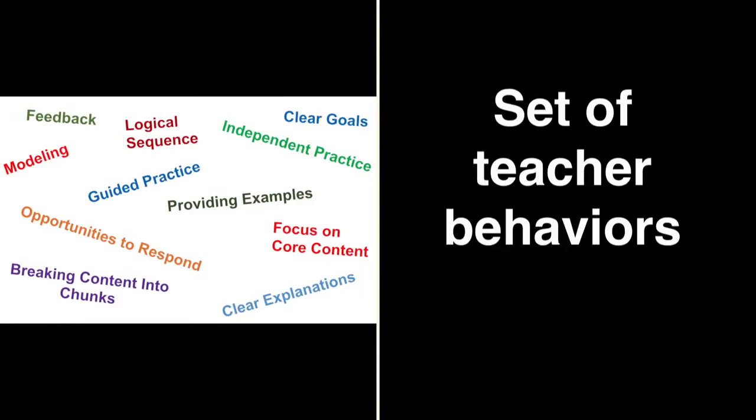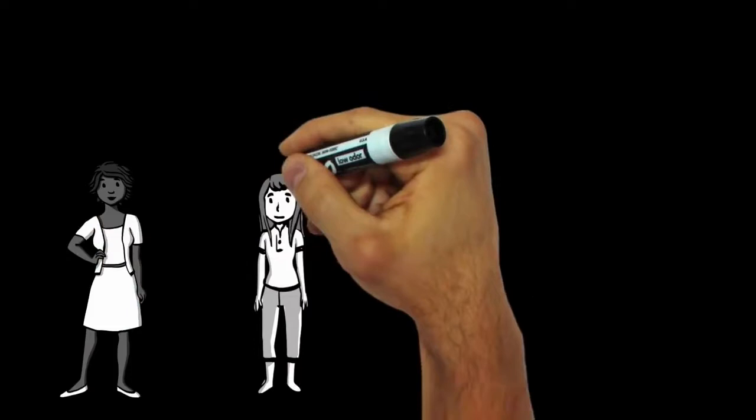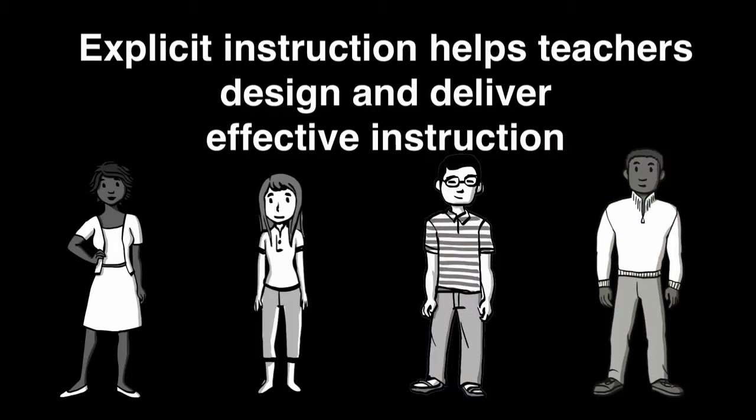Explicit instruction is really a set of teacher behaviors that are individually and collectively effective and efficient for supporting student outcomes. Put simply, Explicit Instruction helps teachers design and deliver effective instruction for a range of student learning needs.